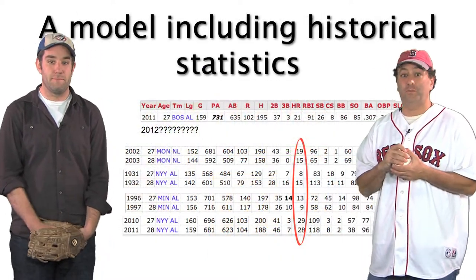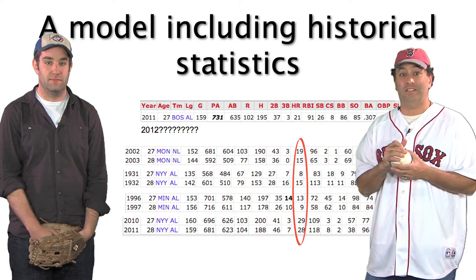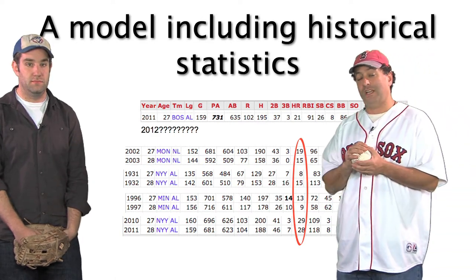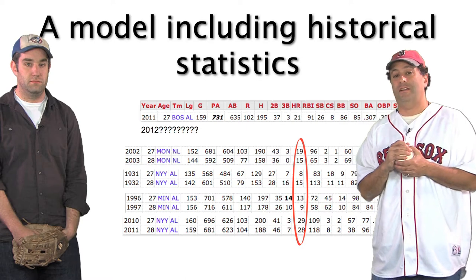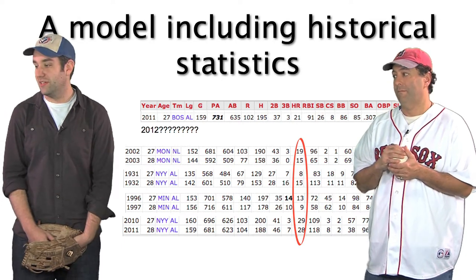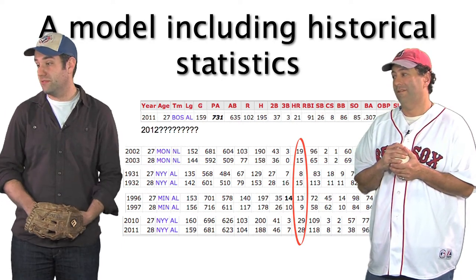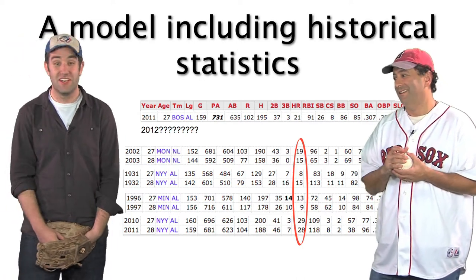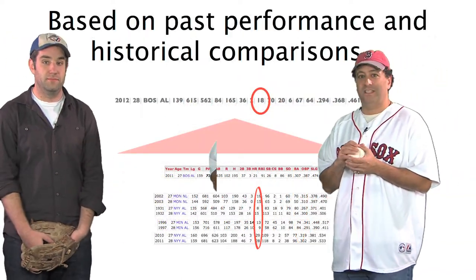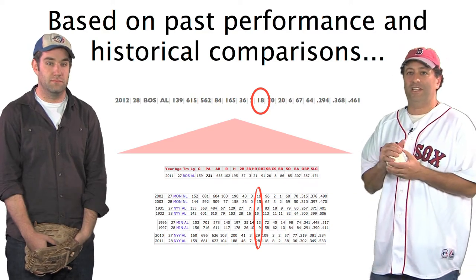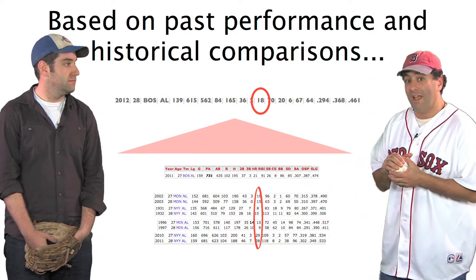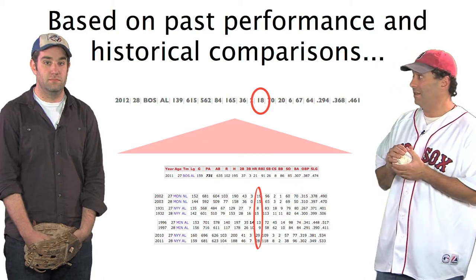Since those players had similar performances up to age 27, but are older than Pedroia, we know what they did when they turned 28. We can flip over their baseball cards and look at their performance in their 28th year. Jose Vidro hit 15 home runs at 28, Tony Lazzeri also hit 15, Chuck Knoblauch hit 9, and Robinson Cano hit 28. It ranges from 9 to 28, but the average second baseman with a performance like Pedroia's hit around 18 home runs — so we can predict that Dustin Pedroia is going to hit 18 home runs in 2012.